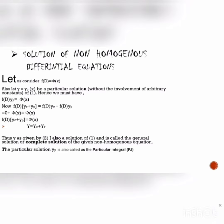Now, f(D)(yc + yp) = f(D)yc + f(D)yp, which further continues and we get the equation as y = yc + yp.